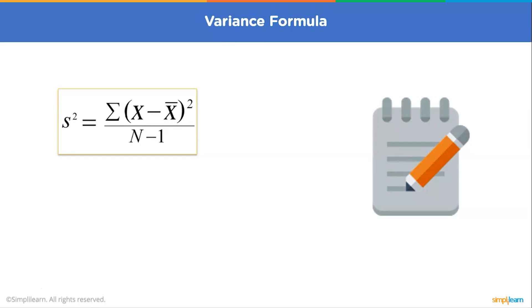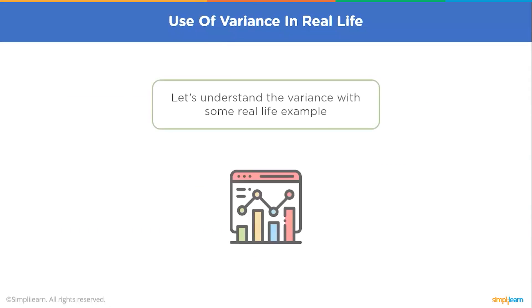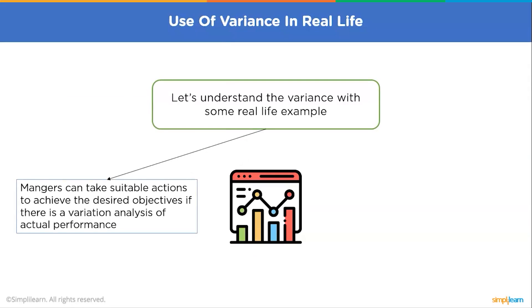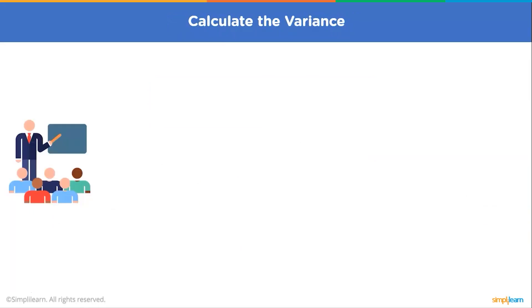So to calculate the formula, we just have to square the formula that we have seen in the standard deviation. So the formula of the variance is sigma x minus x bar whole square divided by n minus 1, where x is the value in the data set, x bar is the mean of the data set, and n is the number of data points in the data. Let's see some examples where variance is used in real life. In a real life situation, managers can take suitable actions to achieve the desired objectives if there is a variation analysis of the actual performance. You can compare the variation of the performance in different quarters against the mean of the performance of all the employees. The second example you can think of is the analysis of the performance of different organizations.